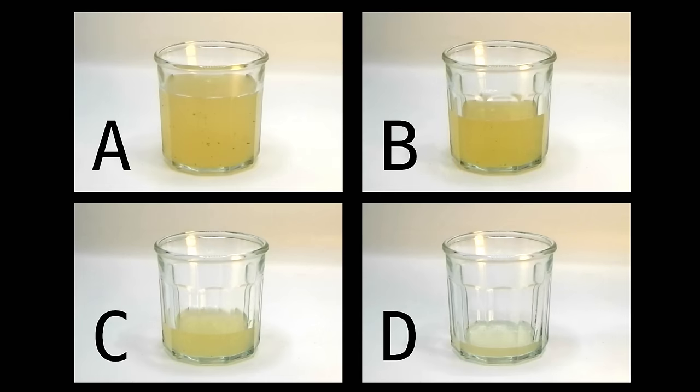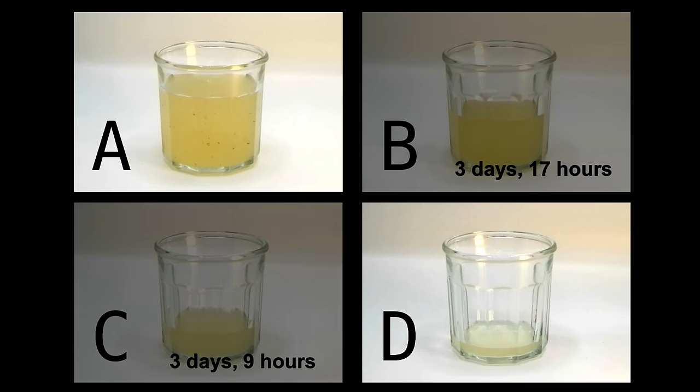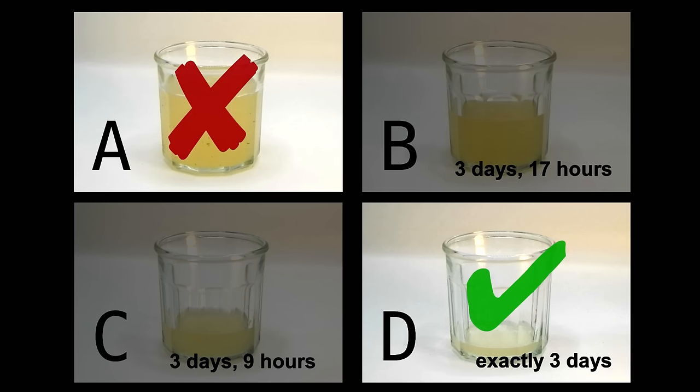So if it doubled in the final seven hours, the container was only half full just seven hours before it began spilling over. It was only about one quarter full fifteen hours before. At twenty-four hours before, at the end of the third day, it was less than one-eighth full. That is, it was still mostly empty.